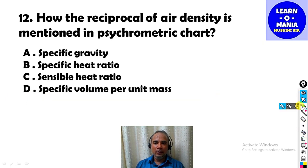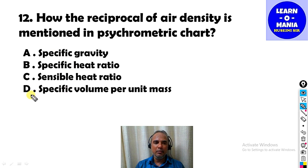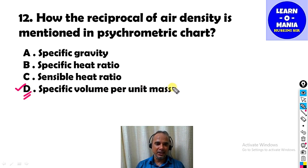Our next MCQ: How is the reciprocal of air density mentioned in the psychrometric chart? The answer is option D — specific volume per unit mass. Reciprocal of air density is specific volume per unit mass.